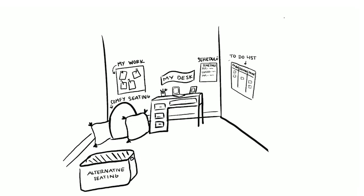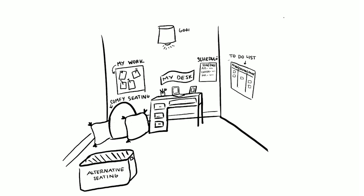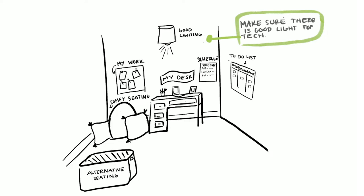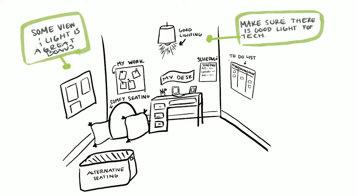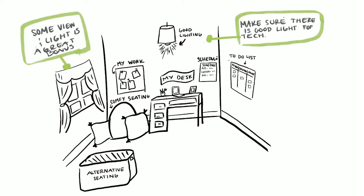The next thing is to consider lighting. Make sure your student has significant light, whether it's natural or from a lamp. You want to make sure that they're able to see everything that they're doing.